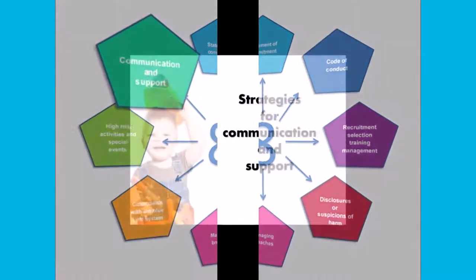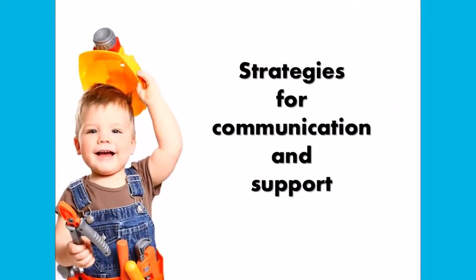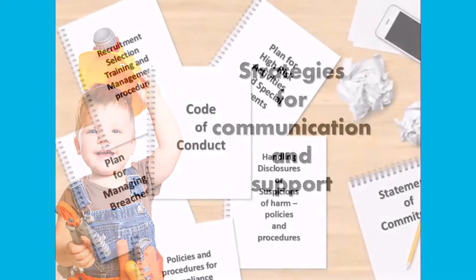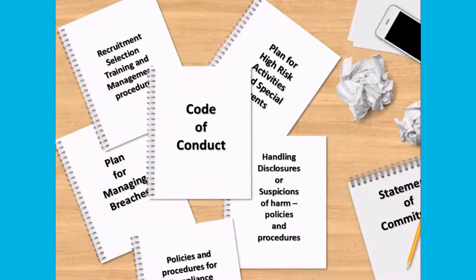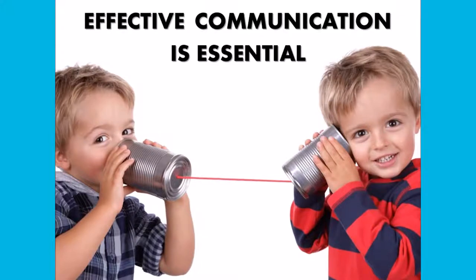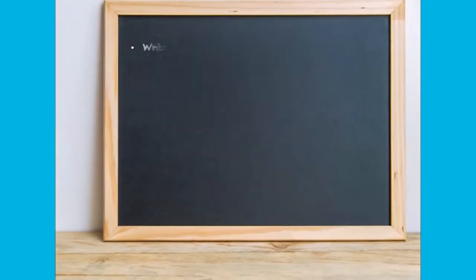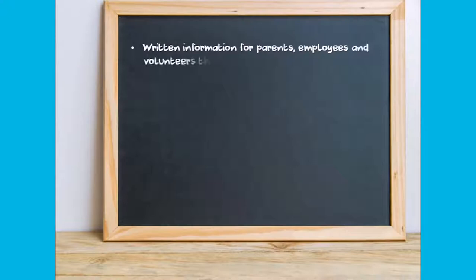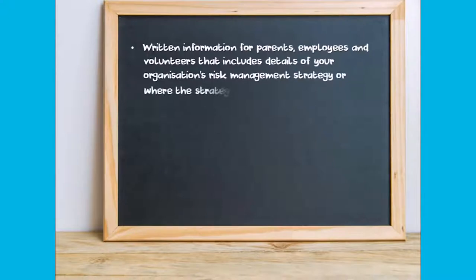The eighth requirement is to have strategies for communication and support. As emphasized throughout this video series, it is essential for your organization to have carefully drafted policies and procedures relevant to reducing the risk of harm to children. These strategies will be most effective when successfully communicated to all people involved in your organization. It is critical for your communication and support strategies to include written information for parents, employees, and volunteers that includes details of your organization's risk management strategy, or where the strategy can be accessed.